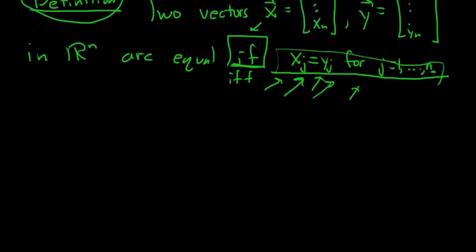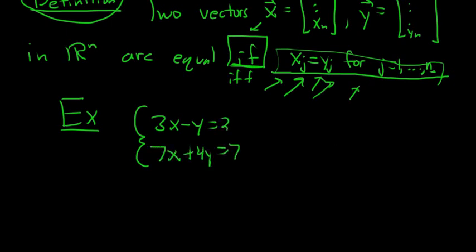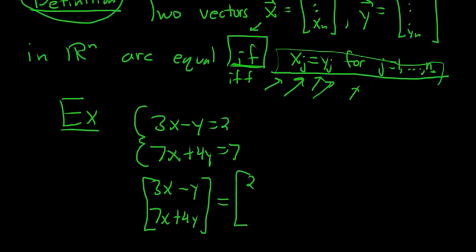Let's do another example. How could you even use vectors? What are they for? Here's an example. Let's say you have a system of equations: 3x minus y equals 2, and 7x plus 4y equals 7. You can write this as a vector equation. You can write this as the vector (3x - y, 7x + 4y), and this would be equal to (2, 7). So this system of equations is equivalent to this vector equation.